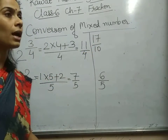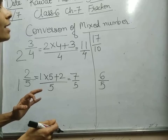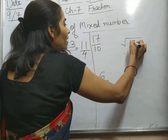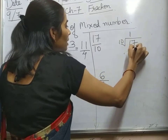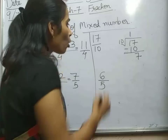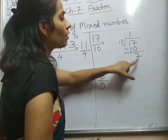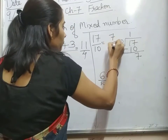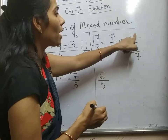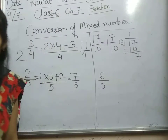Seventeen by ten — if we are given an improper fraction and we are told to convert it into a mixed fraction, we have an easy process. We have to divide seventeen by ten. Ten ones are ten. Remainder is seven. Now, we have to convert it into mixed fraction form. The remainder comes at the top, the denominator remains the same — so we put ten here — and the quotient one comes in the whole part. So, it is one and seven by ten.